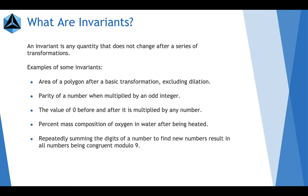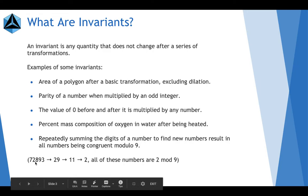And repeatedly summing all the digits in a number to find new numbers results in all numbers being congruent modulo 9. Here's an example, 72,893. If you add all of these digits up, 7 plus 2 plus 8 plus 9 plus 3, that gives you 29. Add these up, 2 plus 9, that gives you 11. 1 plus 1, that gives you 2. All of those numbers are 2 modulo 9.